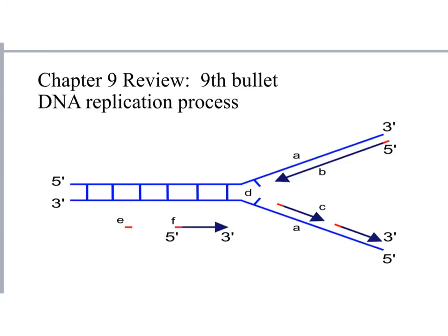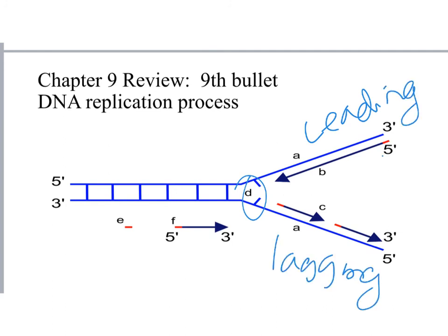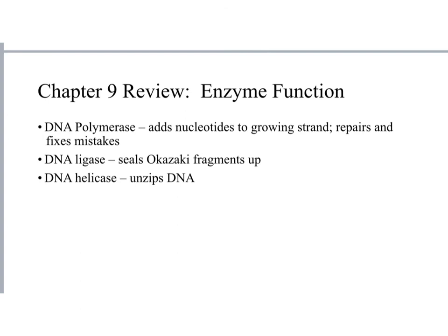Understand DNA replication. An enzyme unzips the DNA molecule. The leading strand is replicated continuously toward the fork in the 5' to 3' direction. The lagging strand must also grow 5' to 3', so it grows away from the fork, creating gaps called Okazaki fragments that must be sealed. Know three key enzymes: DNA polymerase adds nucleotides to the growing strand and repairs mistakes; DNA ligase seals the Okazaki fragments; and DNA helicase unzips the DNA.